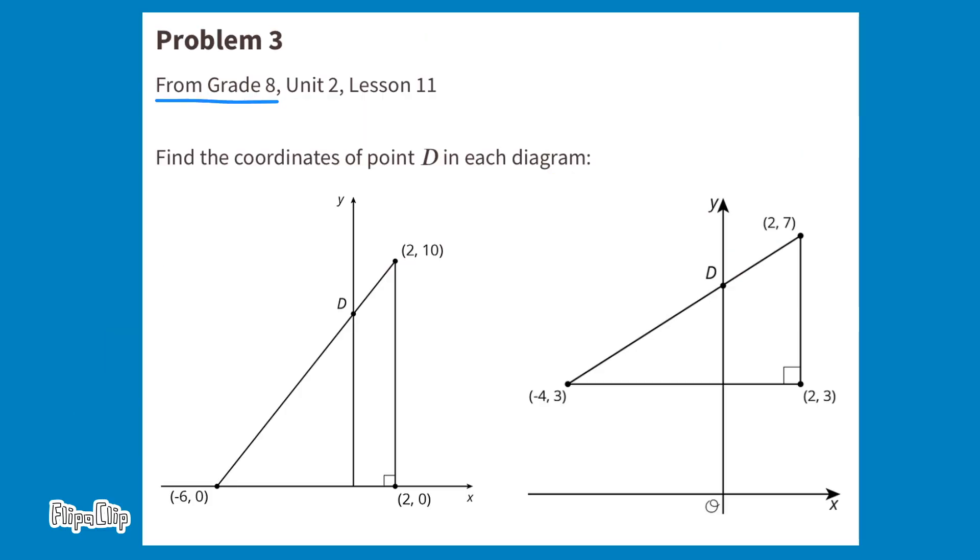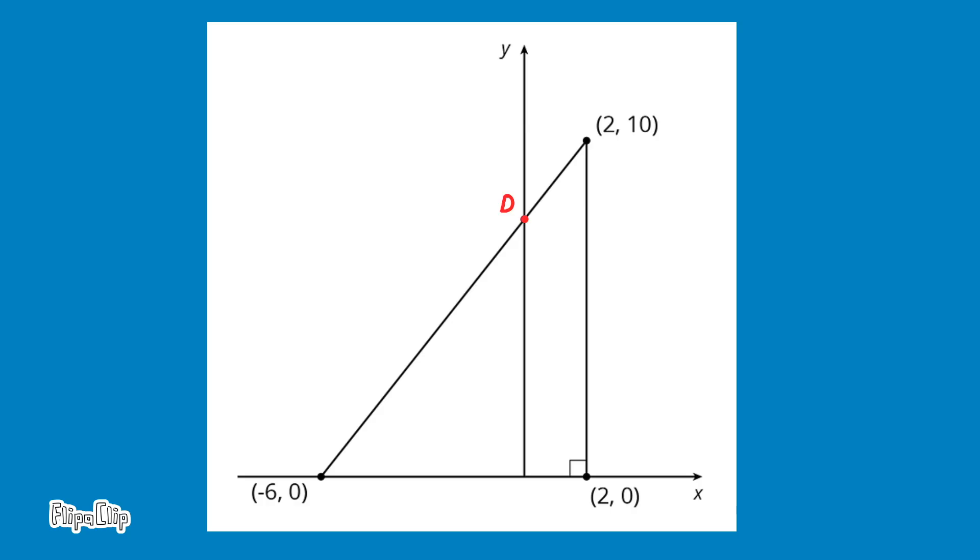Problem number three. From eighth grade, unit two, lesson 11. Find the coordinates of point D in each diagram. They've given us just enough information that we can figure out the exact location or the coordinates for point D. The obvious information is point D is located on the Y-axis. That means that it started at the origin and did not move to the right or to the left along the X-axis. So the X value for point D would be zero. The trick is finding the Y-value. How far up the Y-axis is D.